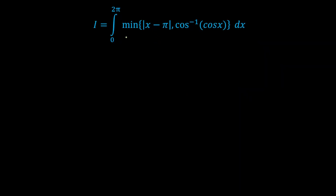In order to calculate the integral from 0 to 2π, first we need to define the function from 0 to 2π — that is, for both |x - π| and cos⁻¹(cos x). The best way to find the minimum is not to check individual values, but to draw the graph of both functions over [0, 2π], superimpose the graphs, and then find the minimum.